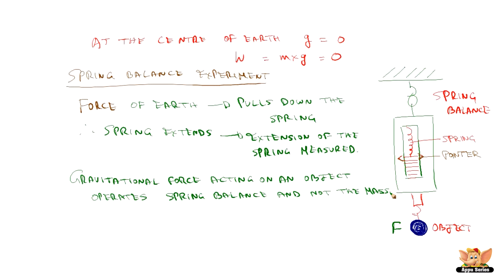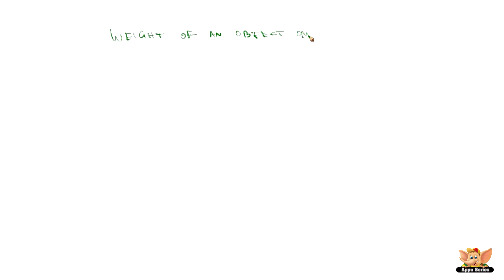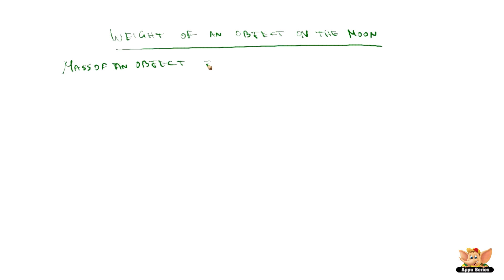Having understood the concept of weight and how it is related to gravitational force, let us now see what is the weight of an object on the Moon. Till now we have seen weight on Earth; now we will see weight on the Moon. Remember that the mass of the object is the same whether it is on Earth or on the Moon. The weight of an object on the Moon is represented as W_m.